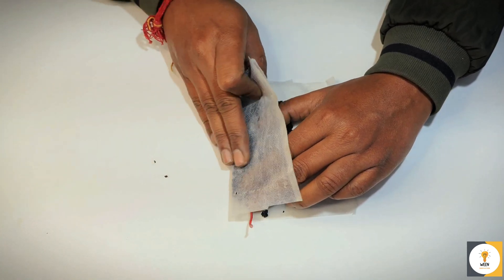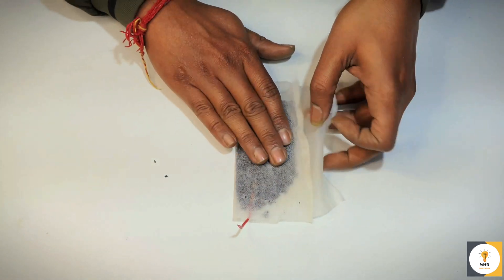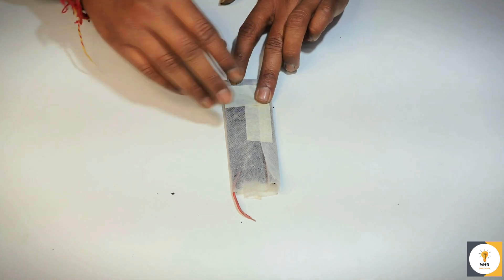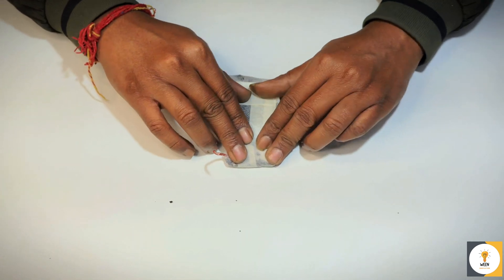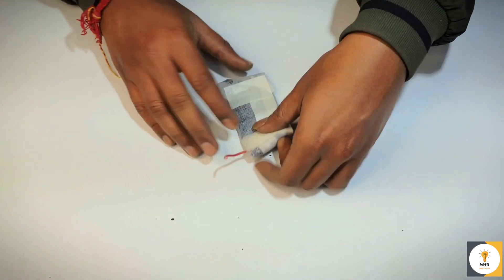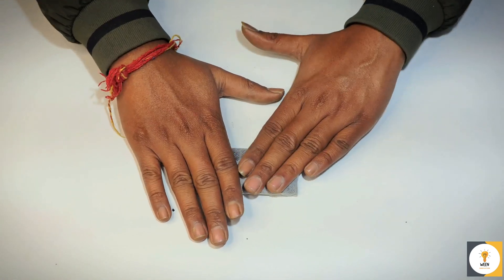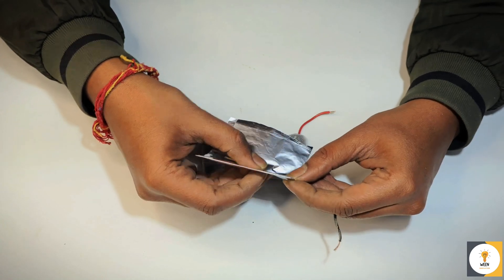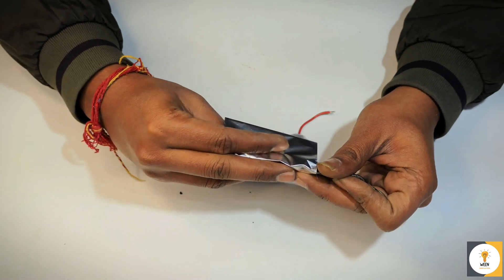Attach a wire in it and fold the cloth properly. Now let's assemble our aluminum air battery. We will put the wire in aluminum foil and place it on the top of the activated carbon.